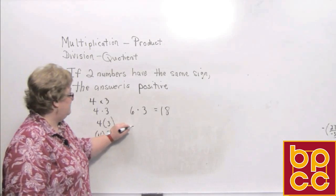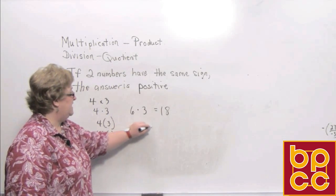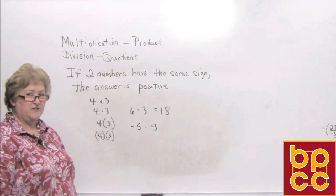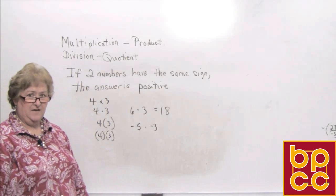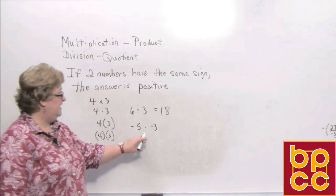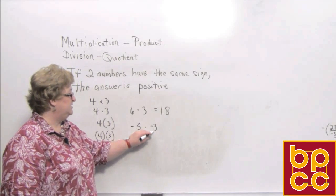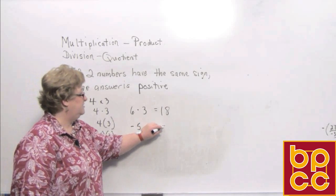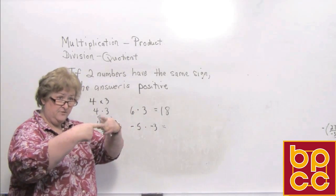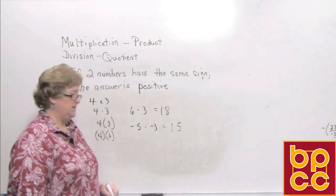If I have a negative 5 times a negative 3 — according to this rule, if the signs are the same on the two numbers, then the answer is going to be positive. Two negatives come together to make a positive, so we have a positive 15.